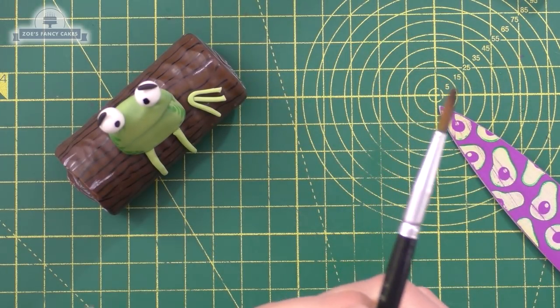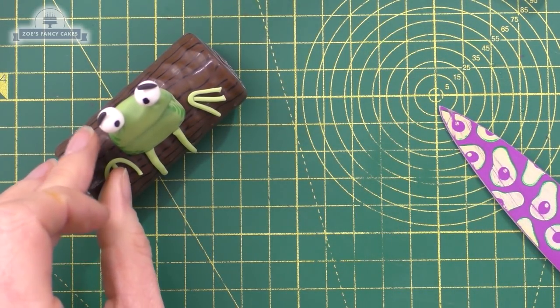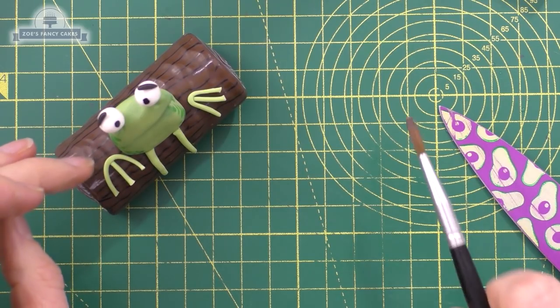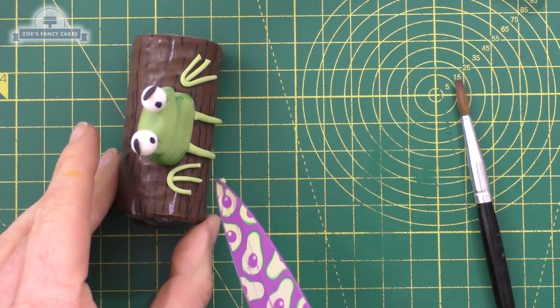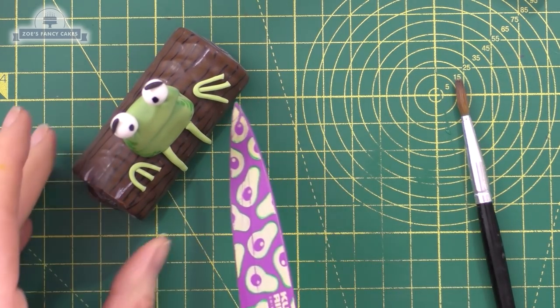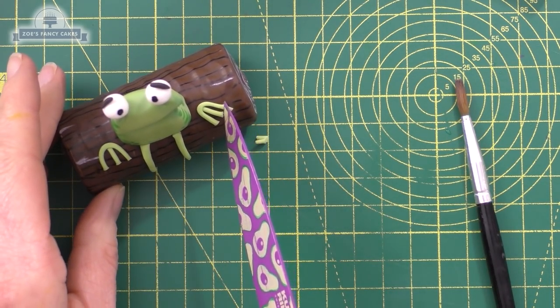Just going to position that on the log next to him, and another one just there. Now they look quite big, I think. We'll probably trim those down in a bit. Let's go a little bit shorter with these. Just make sure you've got a fairly sharp knife for this.